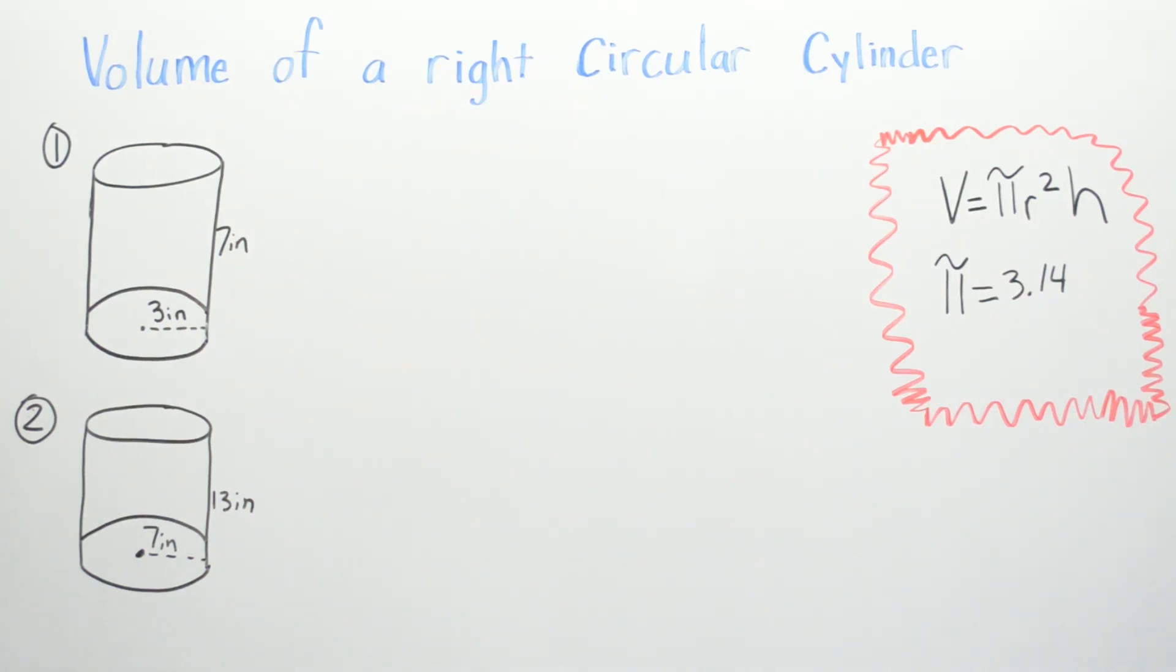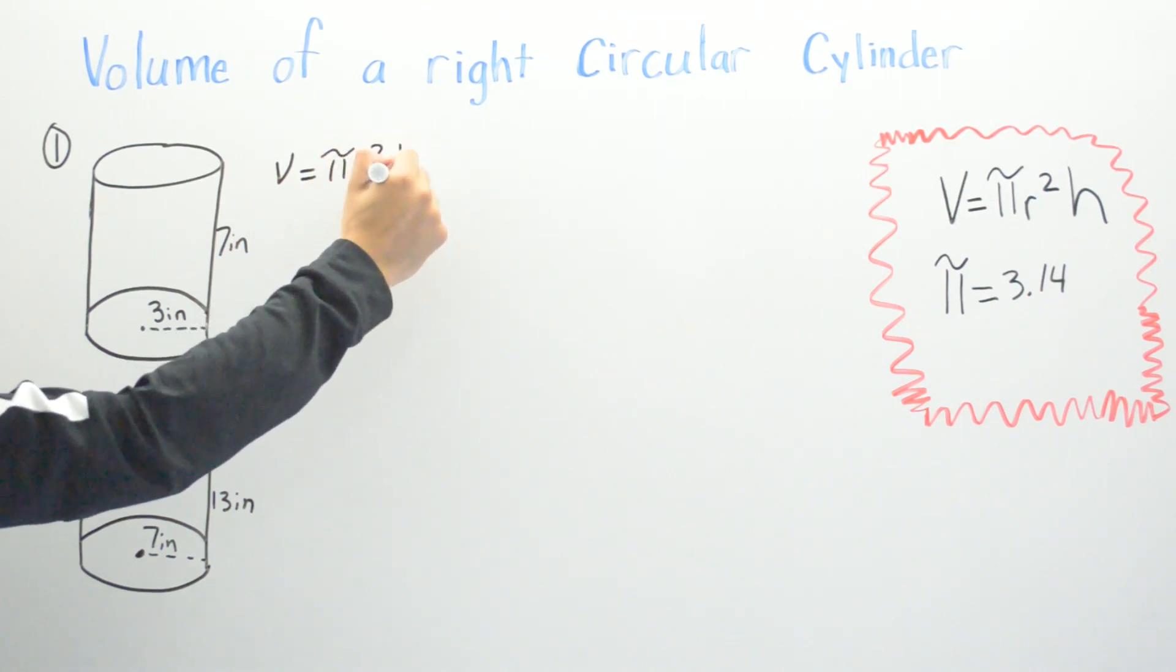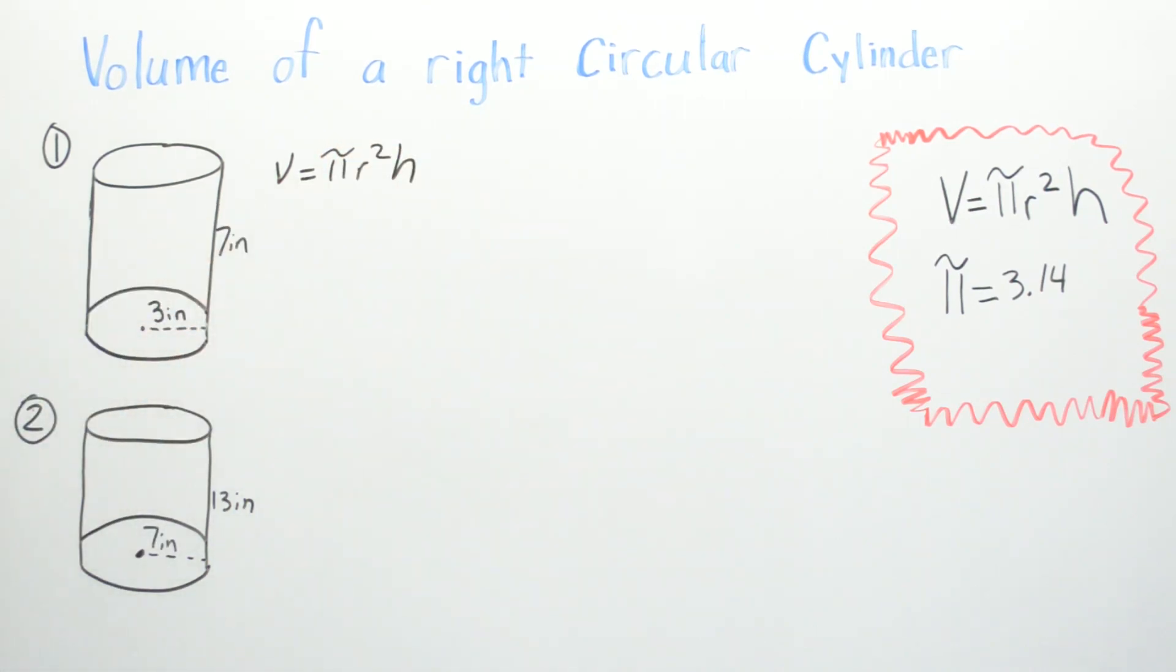In example one we have our radius to be three inches and we have our height to be seven inches. You don't have to start off this way, but I always start by just putting the formula so that way I know what to put in. Then we just put in the numbers where they belong. So the volume equals pi r squared times height, and I'm going to go ahead and input pi.